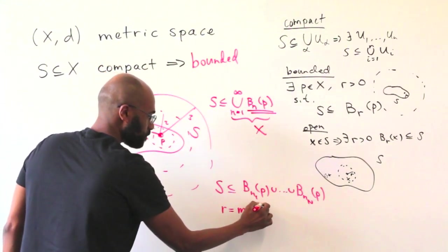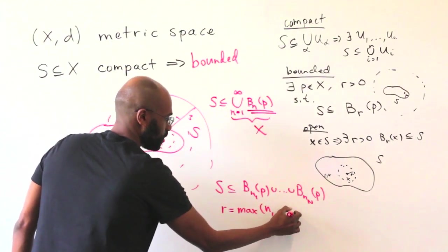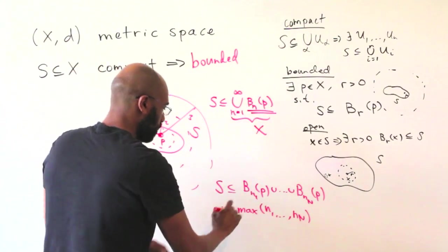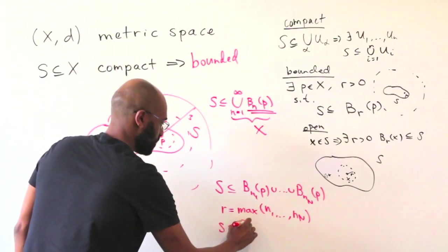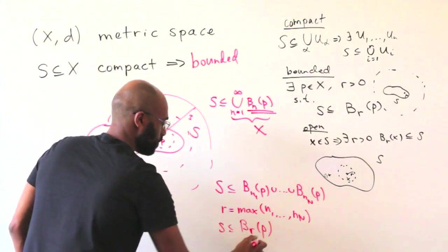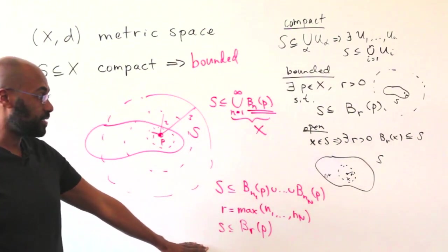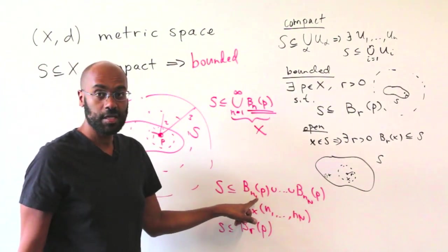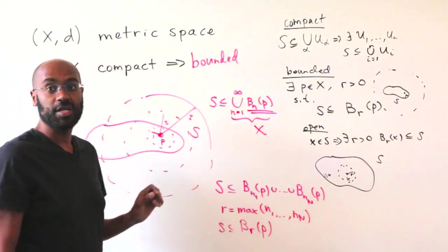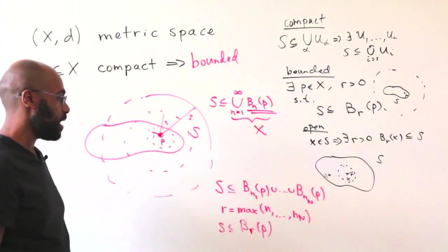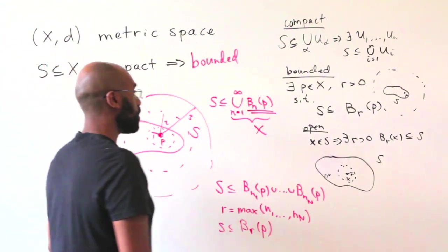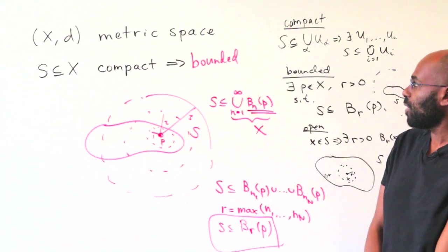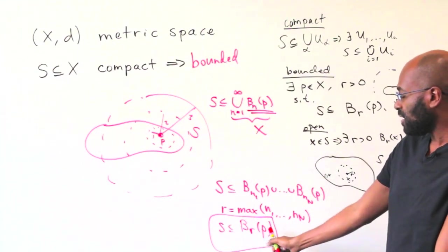The ball of radius R centered at P will have S sitting inside of it because that ball will be one of these balls actually. And it will contain all the other balls because they have the same center and smaller radii. So S sits inside of this one particular ball right here, centered at P.